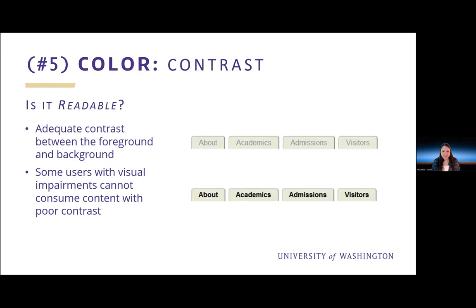The fifth and final thing I'll talk about today is color. The first thing regarding color is contrast — is your content readable to a variety of users because colors were used to provide adequate contrast between foreground and background? Some users with visual impairments cannot consume content with poor contrast. On the right side of my slide, I have two examples of a set of tabs. Note how in the top one the text in the tabs looks very washed out, much harder to read. The second set of tabs is much easier to read on the light background when darker text is used.